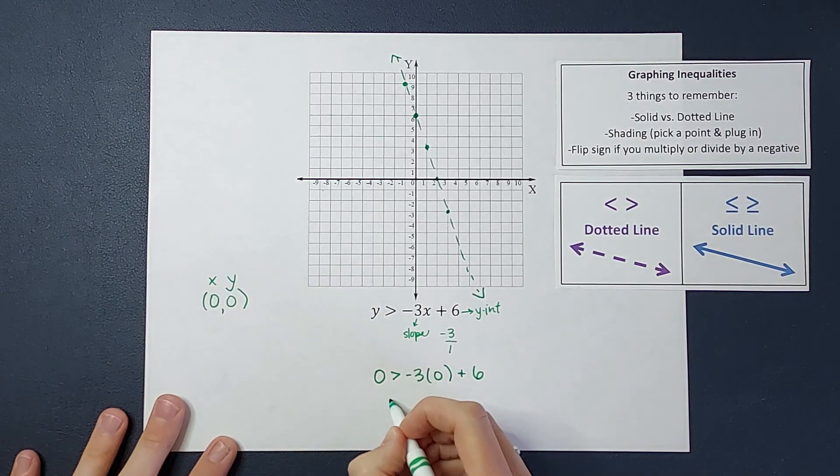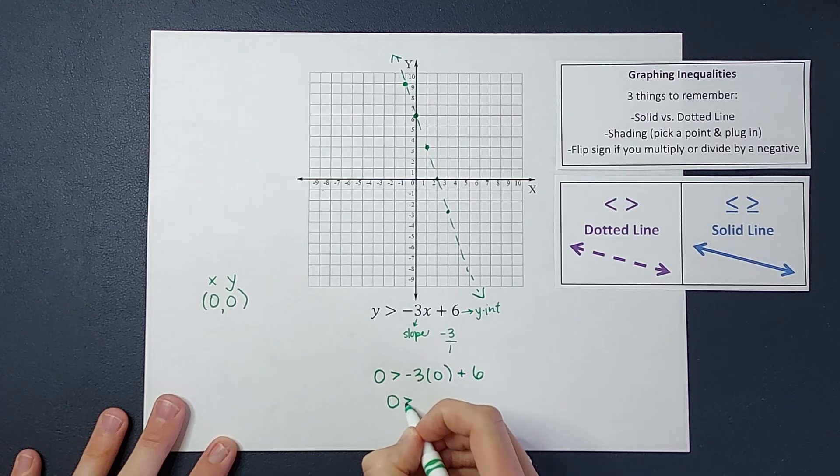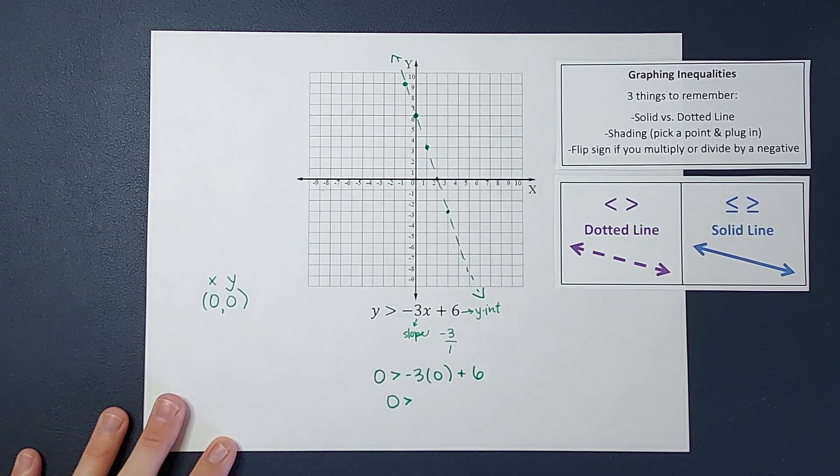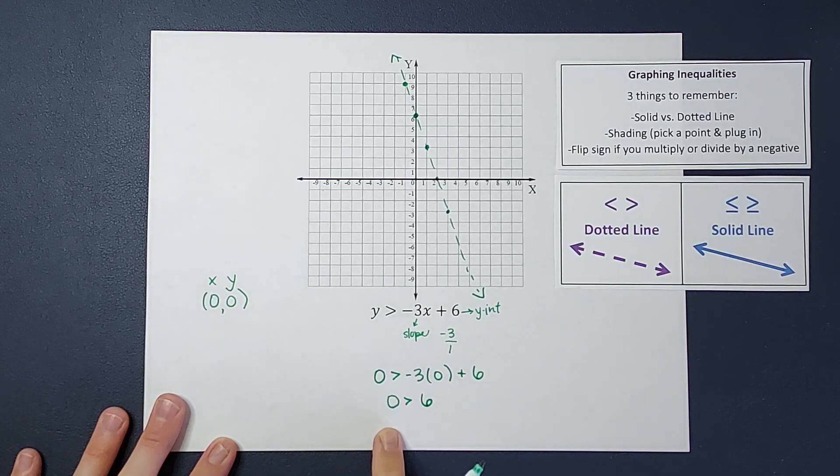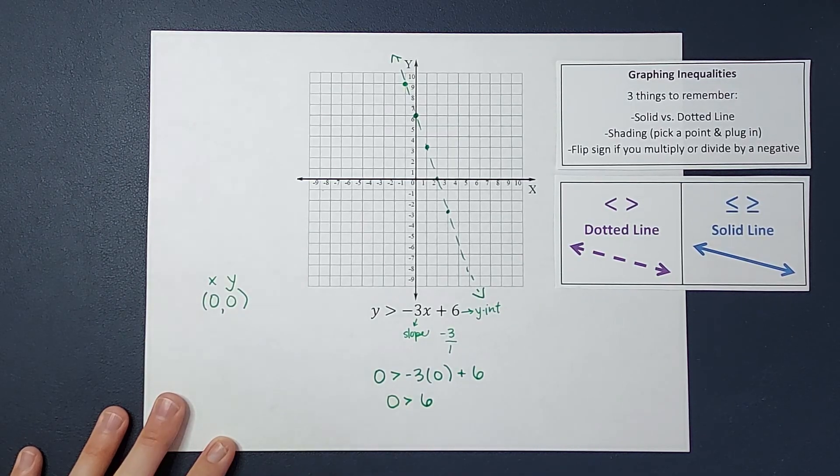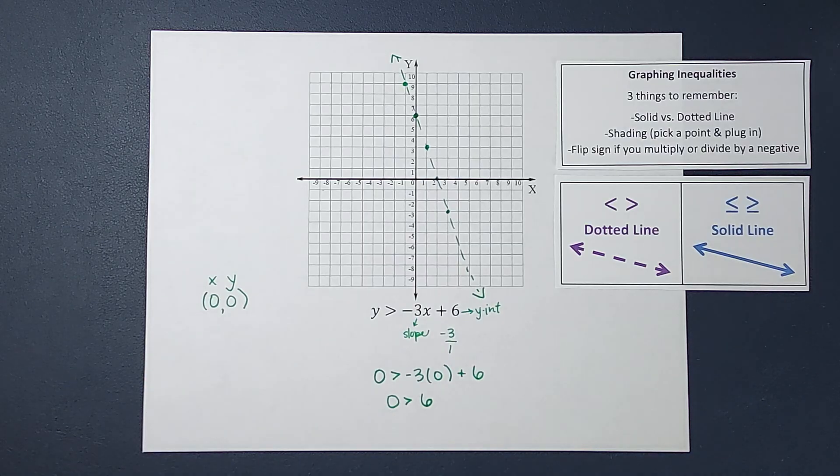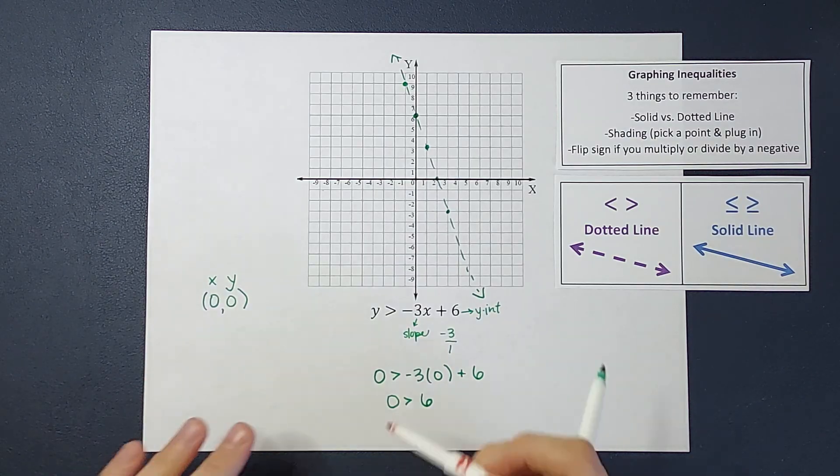Now when I simplify that down, I get 0 is greater than, negative 3 times 0 is 0, right? So that goes away, and then we just have 6. So then I go ahead and look at this and say 0 is greater than 6. Is that true? No, it's not, right? That is not a true statement.